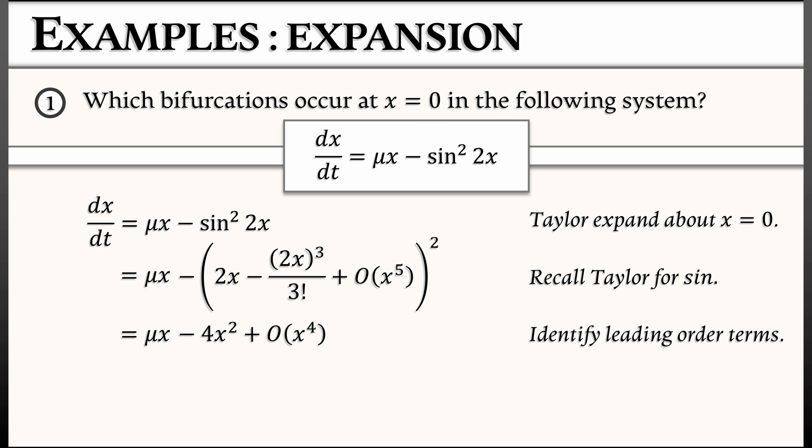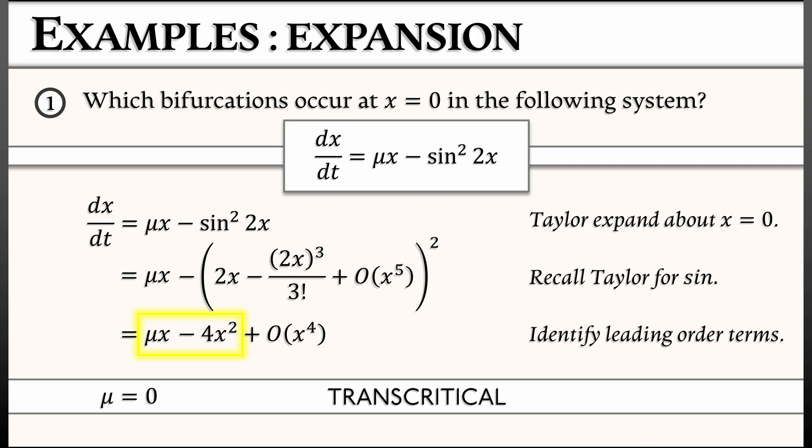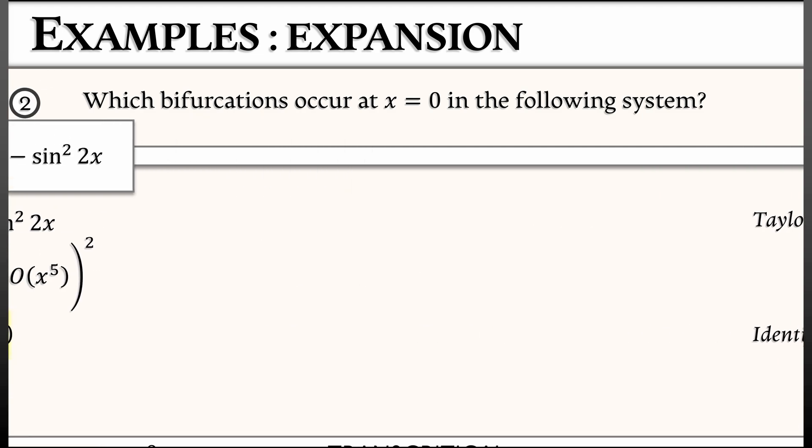So I'm just going to put that all in a trash can. And I can do that because here in the lower order terms, what do I see? I see mu times x minus 4x squared. That matches the normal form for a transcritical bifurcation. And that is happening at mu equals 0 because that's where the linear term vanishes. That's where the stability criterion fails.